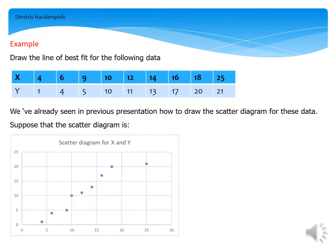Let's see an example. Draw the line of best fit for the following data. You see that we have two variables, X and Y, and some values of them are given. For example, for the variable X,